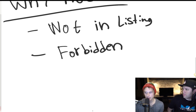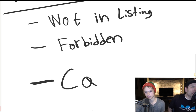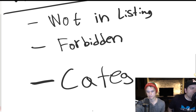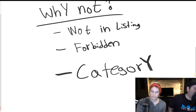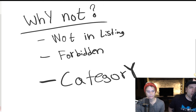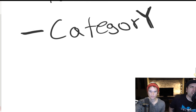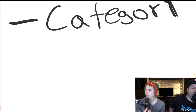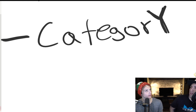Another reason is category relevance. Amazon might say this is not a relevant keyword for this category, so even if you put it in your listing, they won't allow you to index for it. For example, if you have a cell phone case but your product is listed in the beauty category, Amazon is pretty much not going to allow you to index for 'cell phone case' just because you put that word in your listing.